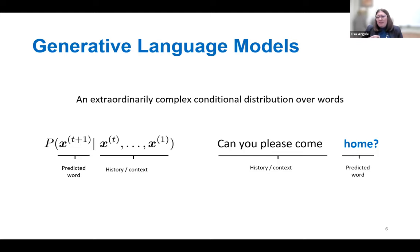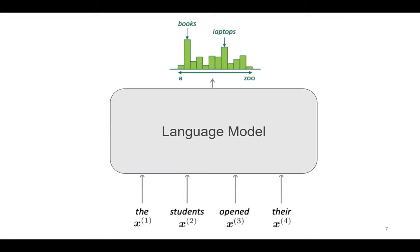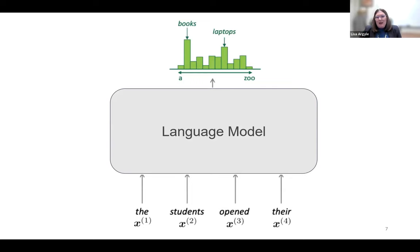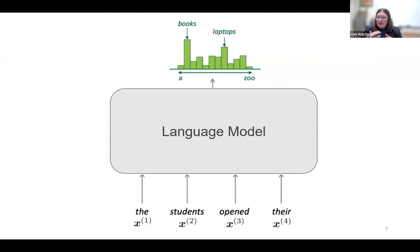Language models are trained by being given a sequence of tokens and asked to predict what comes next, then rewarded for getting that prediction correct and penalized for getting it wrong. The model has a series of very complex weights and calculations, and then assigns a probability to tokens that are going to come next. If we have tokens like 'the students opened their,' the probability distribution for 'books' would be very high; 'laptops' would likewise be pretty high. Some words are going to be very likely, some less likely.